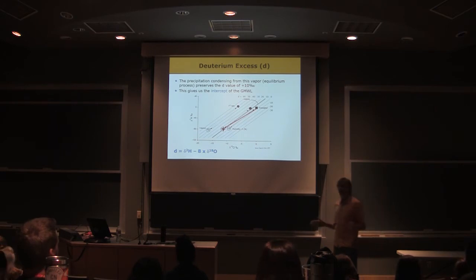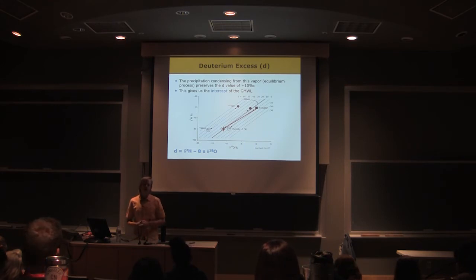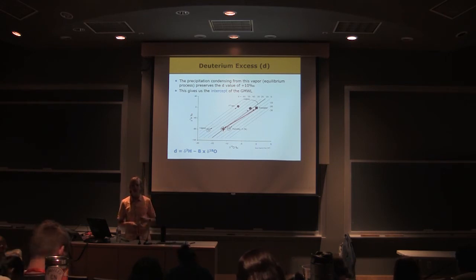So if anybody ever asks you why the intercept of the global meteoric water line is plus 10, you can tell them it's because relative humidity of the free atmosphere of the ocean is 80 to 85%. That's what's doing it. And it gives us a kinetic fractionation there.